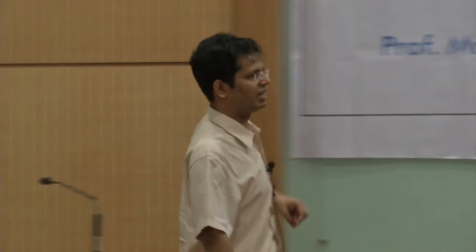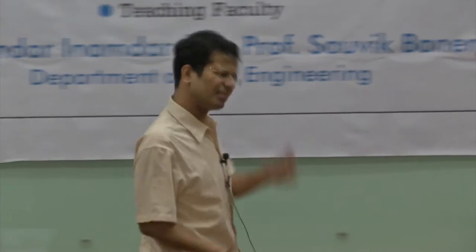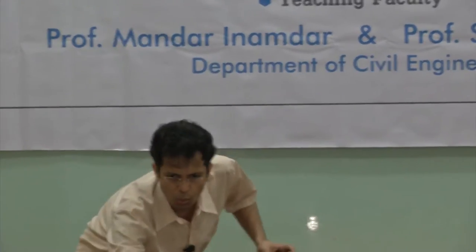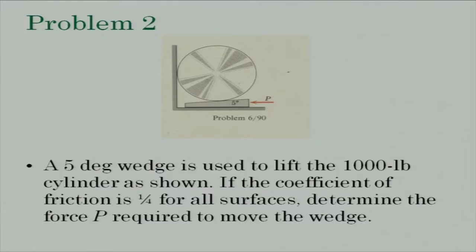The problem statement is really straightforward, like most friction problems, but some thinking is required. How many unknowns do we have? Four unknowns on the cylinder, and at the bottom two unknowns. P is also unknown. So the number of unknowns is 4 plus 2, 6 plus 1 equals 7.